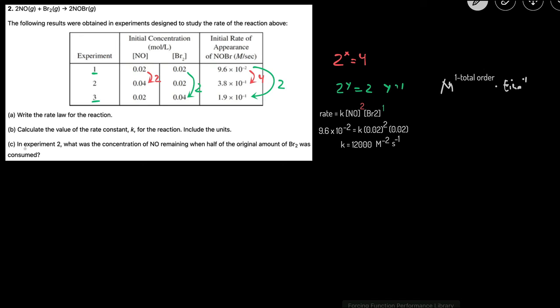And then part C asks us, in experiment 2, what was the concentration of NO when half the amount of Br2 was consumed? So we're going to look at experiment 2. Originally the concentration of Br2 is 0.02. If half is consumed, then it goes to 0.01.